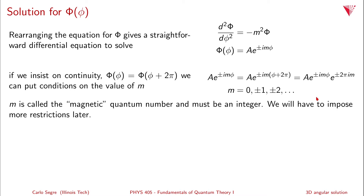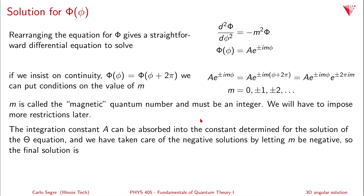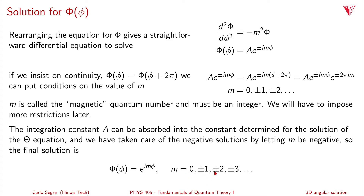m is called the magnetic quantum number and must be an integer. There will be more restrictions later, but for now it ranges to infinity. The integration constant A can be absorbed into the normalization constant for the full angular solution Y, which combines θ and φ. Since m can be ±1, ±2, etc., both positive and negative solutions are covered. The final azimuthal solution is Φ(φ) = e^(imφ), where m = 0, ±1, ±2, …